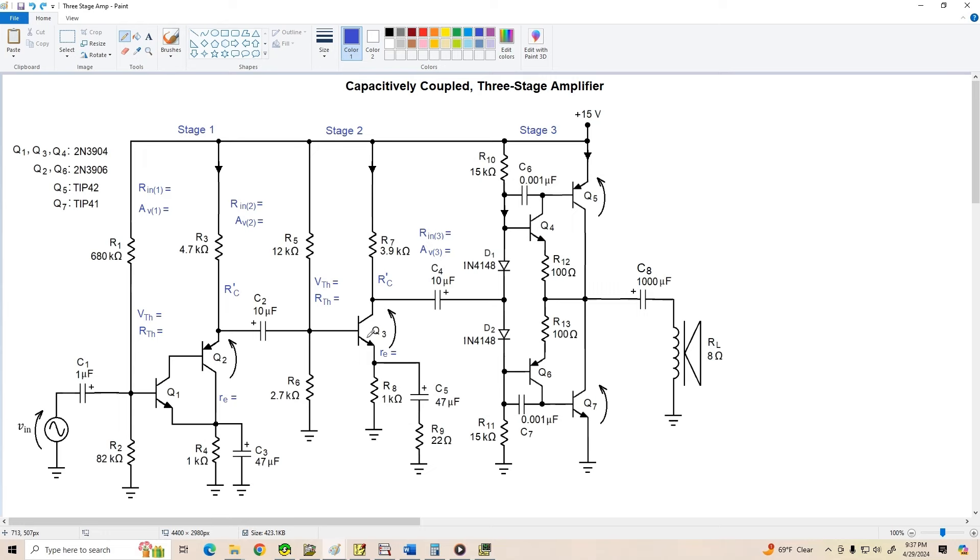But I also used partial emitter bypassing. And the idea here was that I traded off a little bit of the gain magnitude of stage 2 in order to linearize the gain a little bit. That's a pretty good trade-off considering we have two cascaded common emitters. So we're going to have plenty of voltage gain in this amplifier.